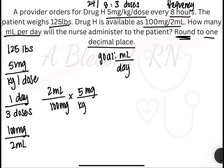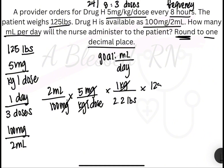I have mg on the bottom, so I need mg on the top. So 5 mg per kg per dose is next — mg crosses out. Now I have kg and dose on the bottom, and both of those have to go. So I will do 1 kg over 2.2 lbs — that will cross out our kg. And now we have pounds on the bottom, so I'll put 125 lbs over 1. Pounds cross out.